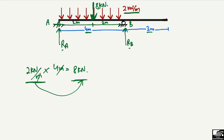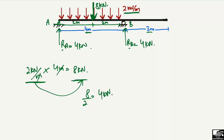Since the 8 kN point load acts at the midpoint between the two supports, half the load is taken by each support. So Ra equals 4 kN and Rb equals 4 kN. This is the easy way to calculate the support reactions.